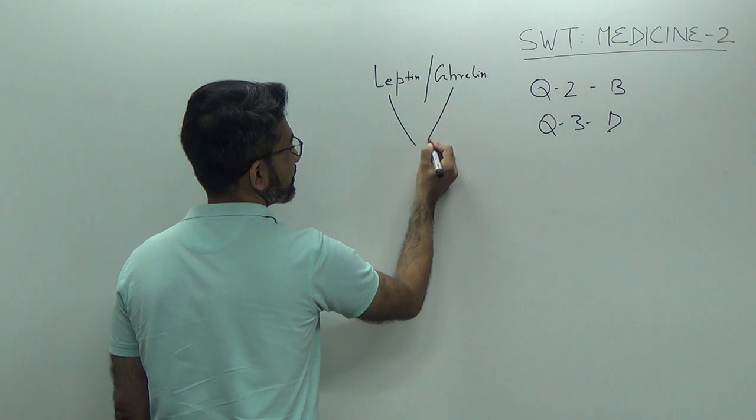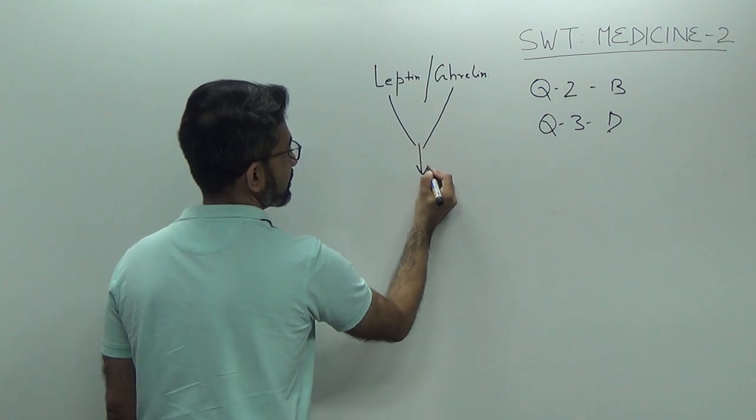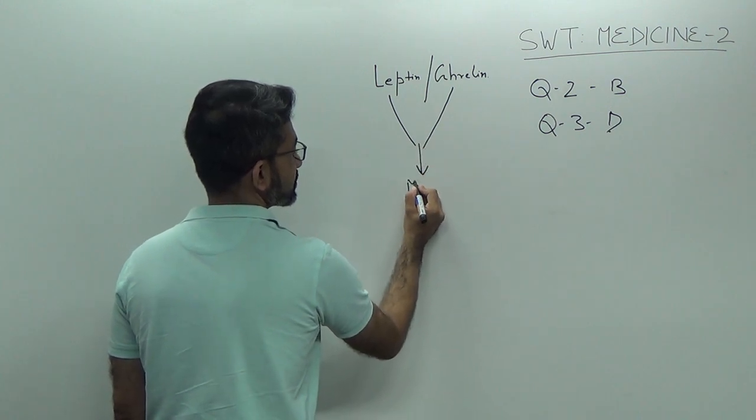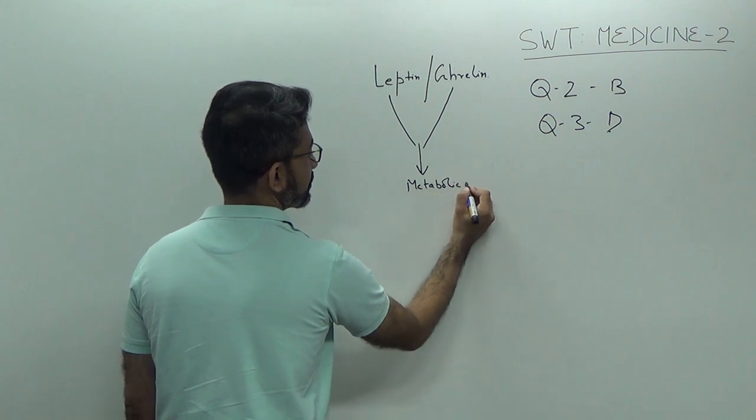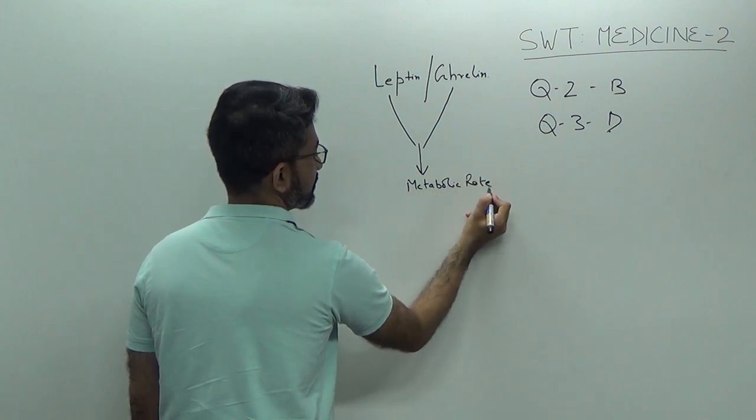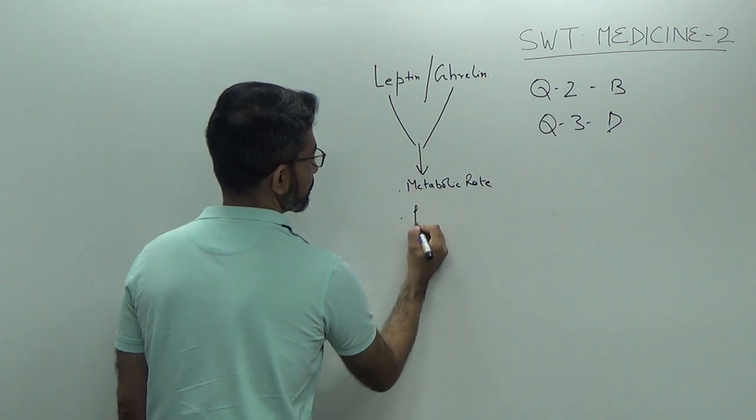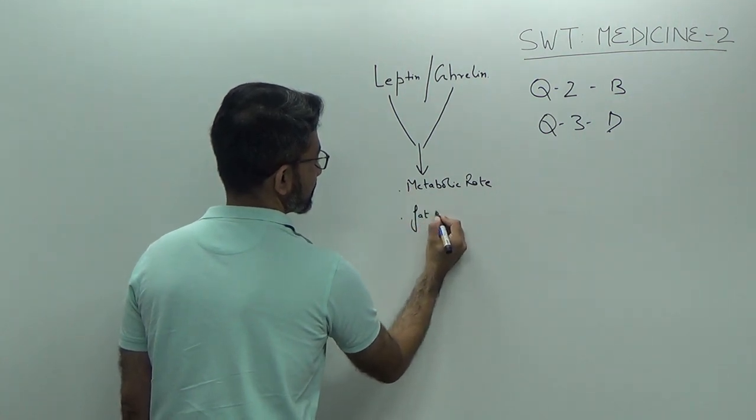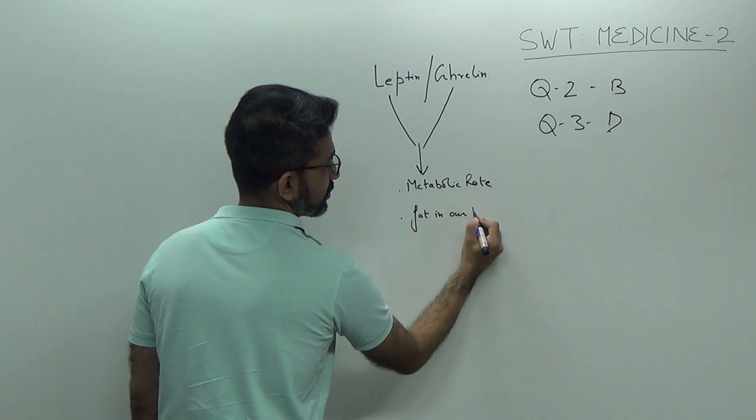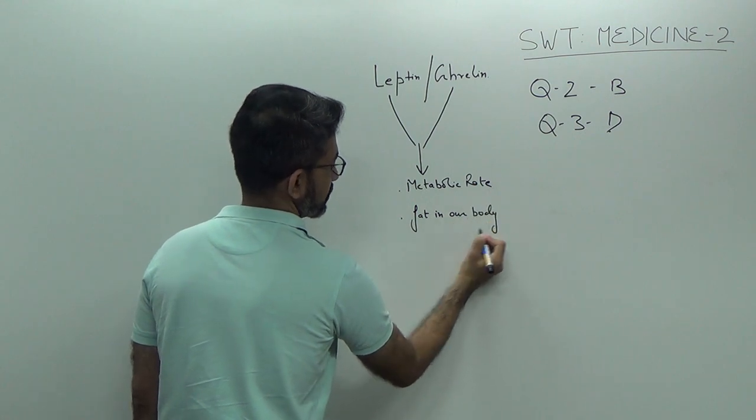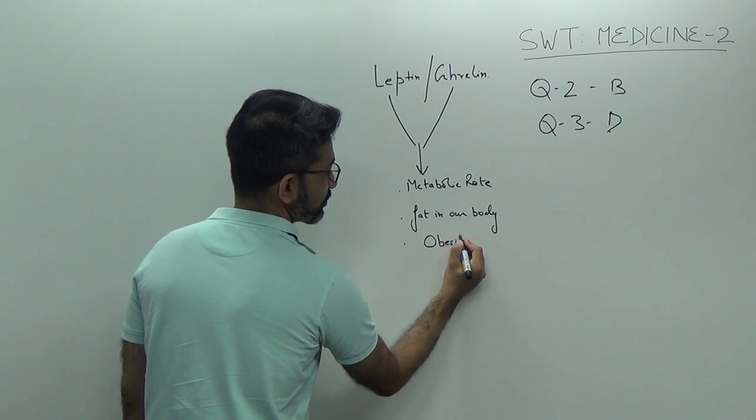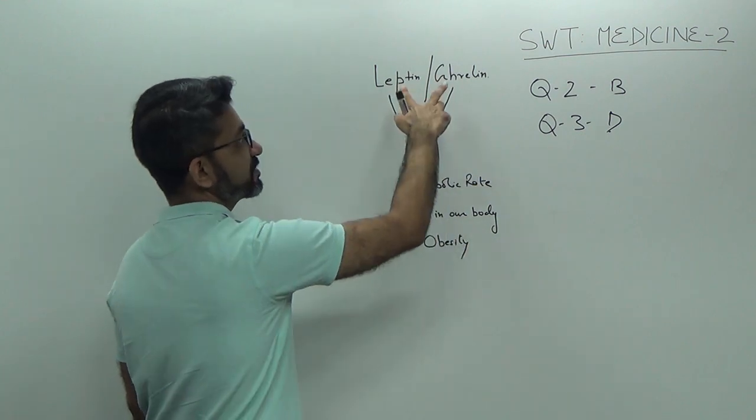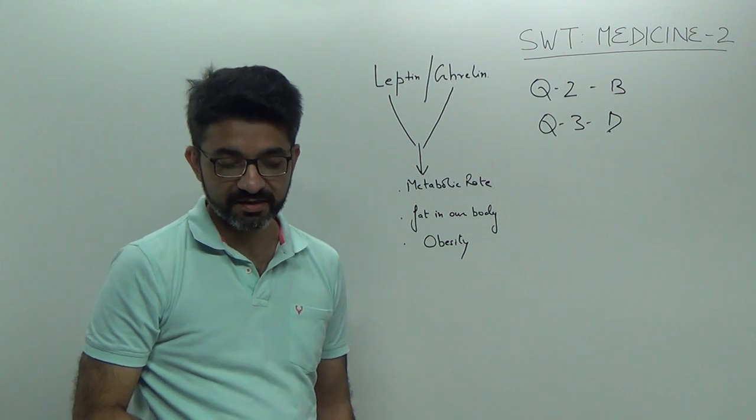The interplay between leptin and ghrelin is responsible for our metabolic rate and formation of fat in our body. Thereby, development or non-development of obesity is between the interplay of leptin and ghrelin.